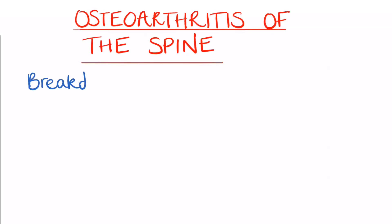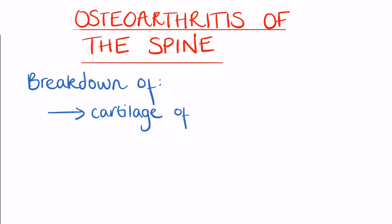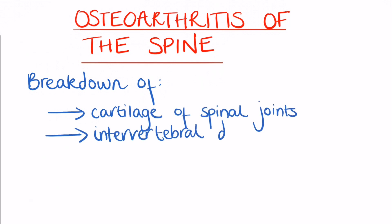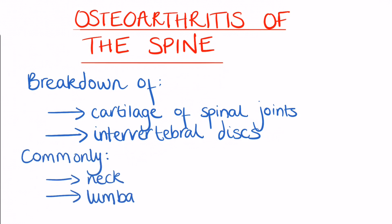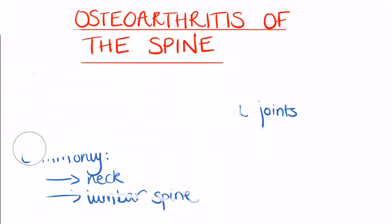Osteoarthritis of the spine is the breakdown of cartilage of joints and discs in the neck and the lower back. The lumbar spine is a common site for osteoarthritis due to its weight-bearing role. Consequently, the facet joints and discs have an increased tendency to degenerative wear.